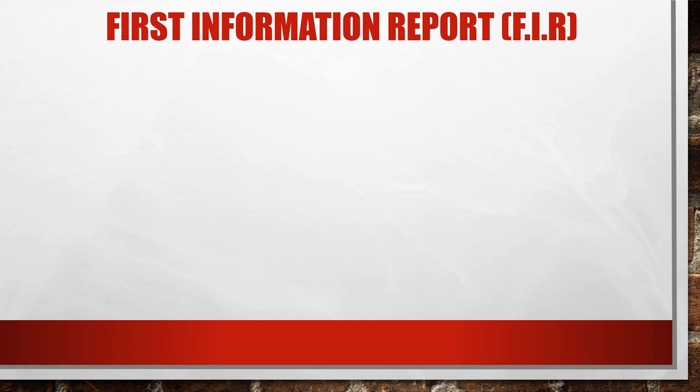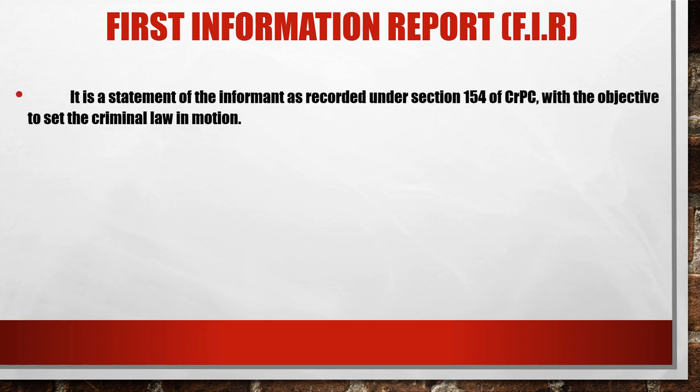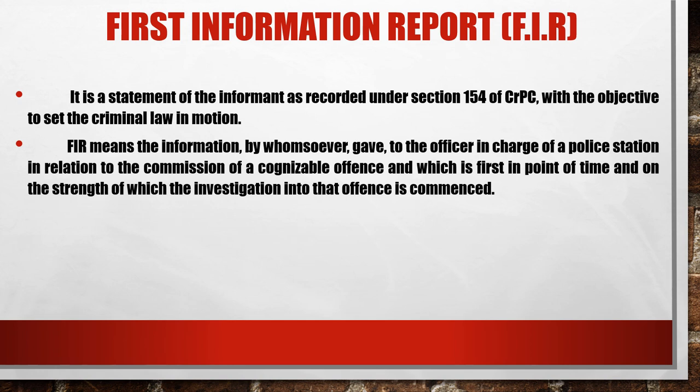Let's discuss all the stages of criminal trial in detail. First is the FIR, that is the First Information Report. Basically, FIR is the statement of the informant as recorded under Section 154 of CrPC, with the objective to set the criminal law in motion. It means the information given to the officer in charge of a police station in relation to the commission of a cognizable offence, which is first in point of time, and on the strength of which the investigation into that offence is commenced.